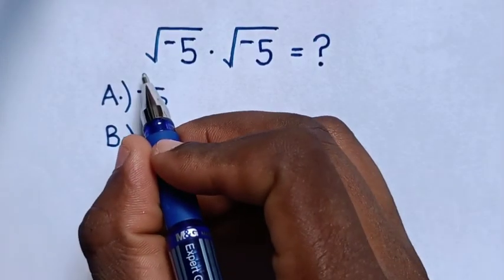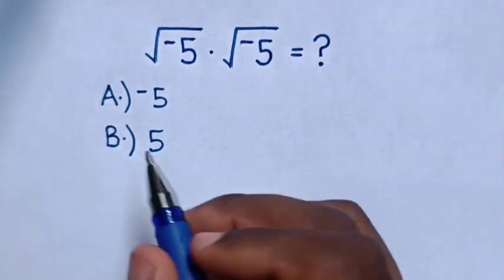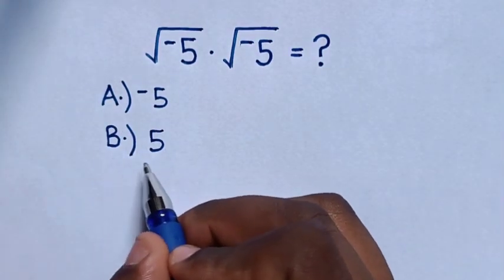Hello! How to solve square root of negative 5 times square root of negative 5 by selecting the answers in A, negative 5, B, 5.